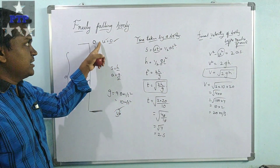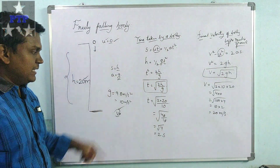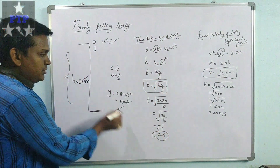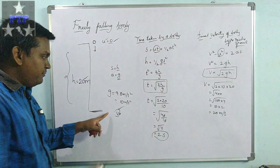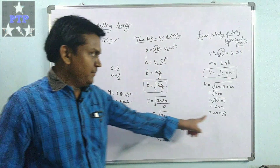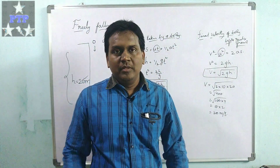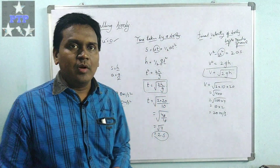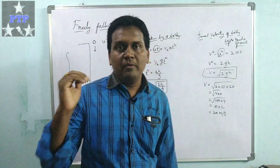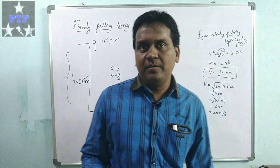So to summarize: the body initially has a velocity of 0 meters per second. The time taken to reach the ground is 2 seconds, and the final velocity before touching the ground is 20 meters per second. This is about the freely falling body which is dropped from the top of a building of height h. Thank you.